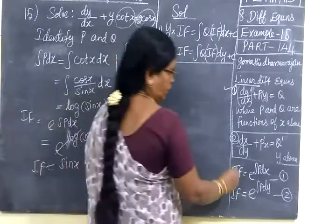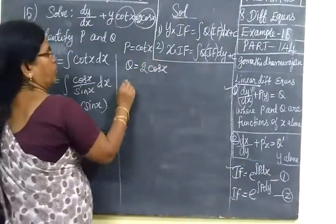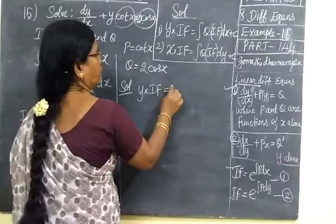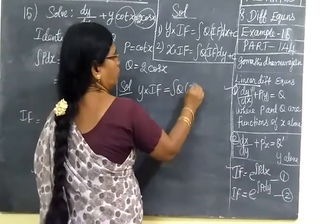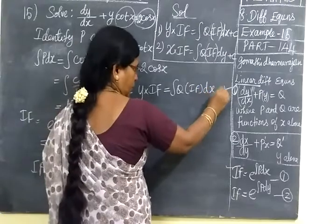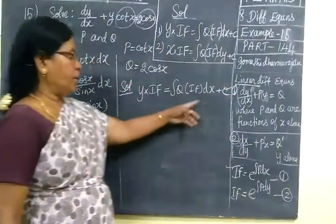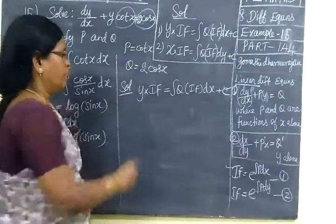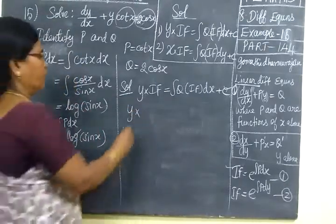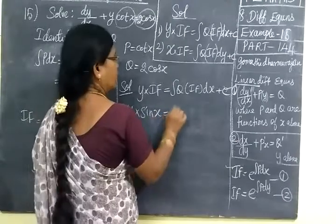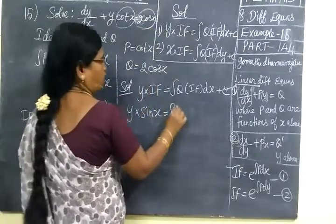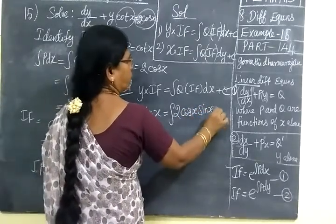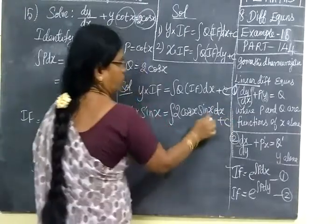We have found the integrating factor. Next we find the solution: y times integrating factor equals integral of Q times integrating factor dx plus c. Since P and Q are functions of x, we write dx. So y·sin(x) equals the integral of Q, which is 2cos(x), times integrating factor sin(x), dx plus c. This gives the integral of 2·sin(x)·cos(x) dx.